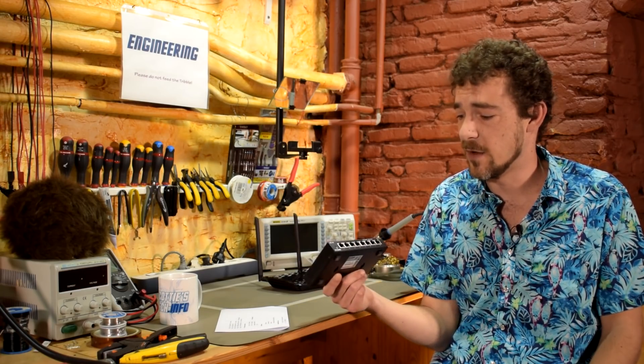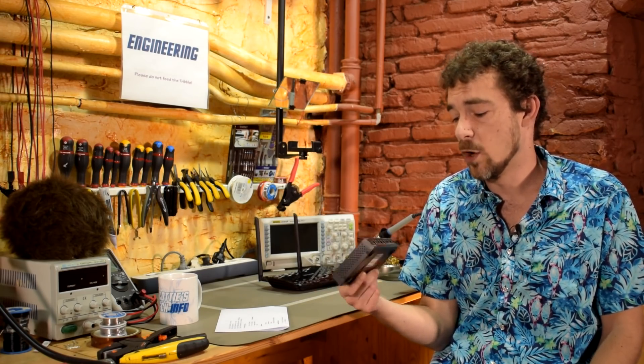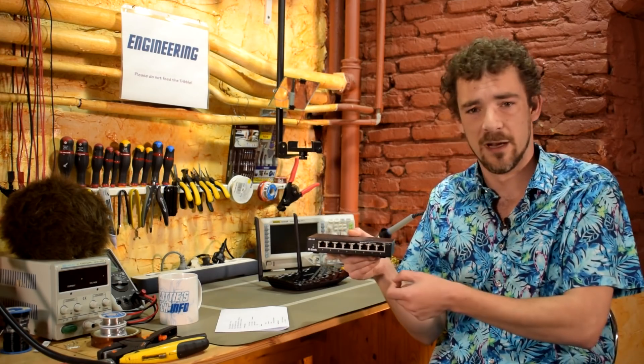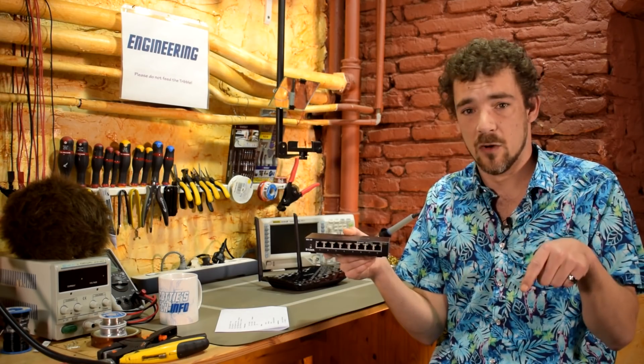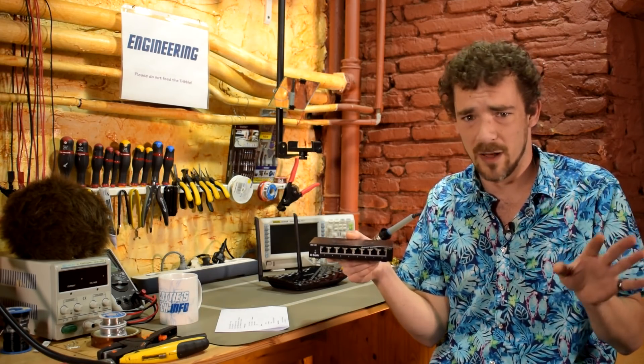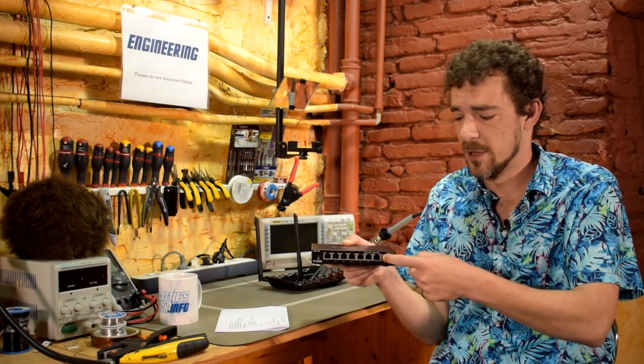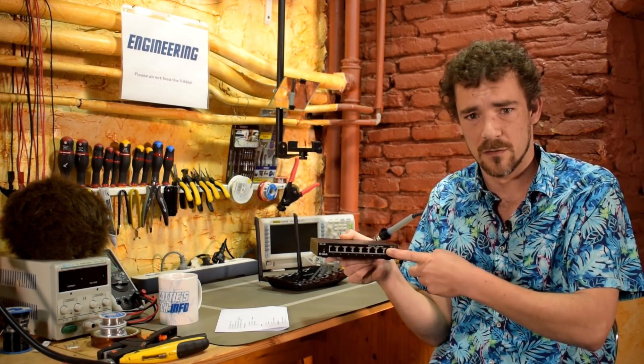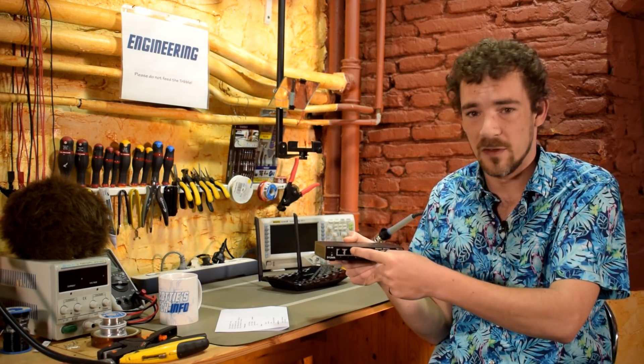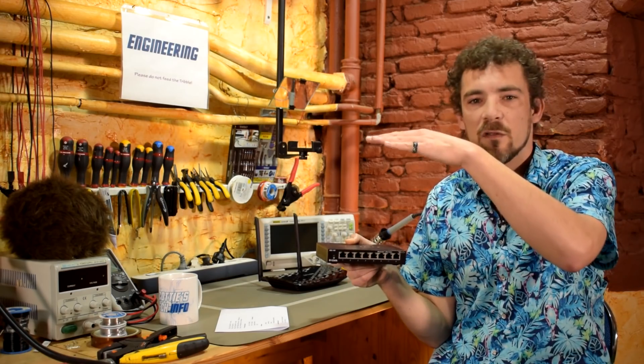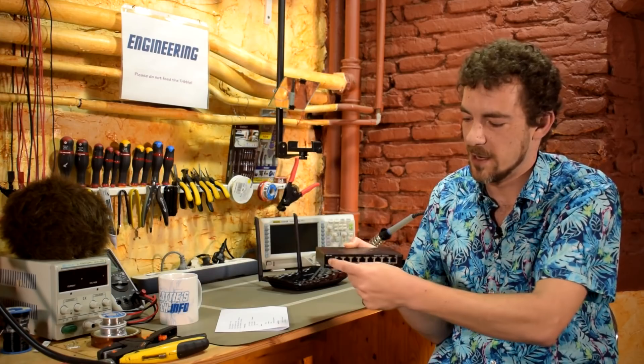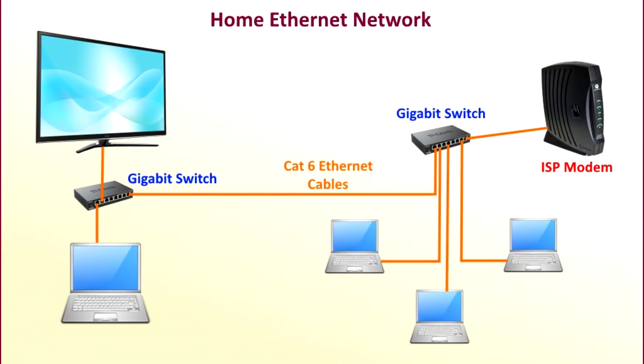Then you buy a bunch of gigabit ethernet switches like this guy. This is a D-Link, it's very good, it's a DGS-108. All you have to do is plop one of these guys, plug it into the wall so it's got power. You're going to take your internet service provider's box, whether it's fiber, DSL, cable modem, whatever, plug an ethernet cable into that, plug the other end into your first ethernet switch. Then you plug all your computers and gizmos into here.